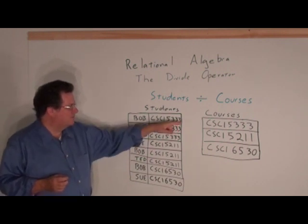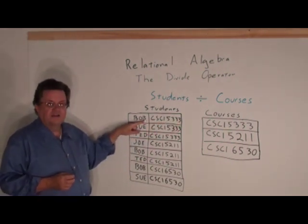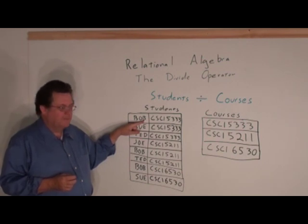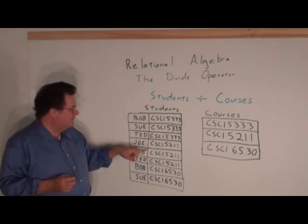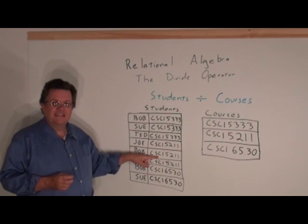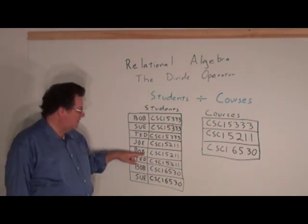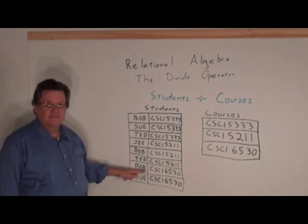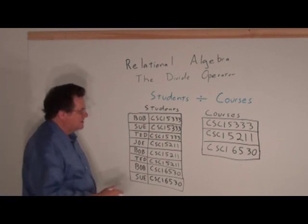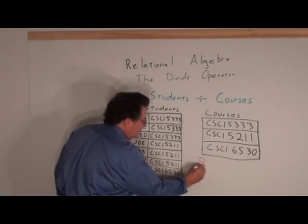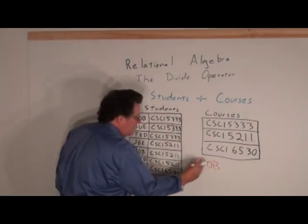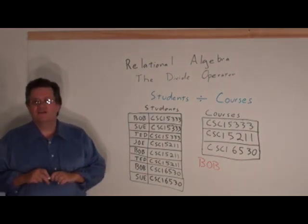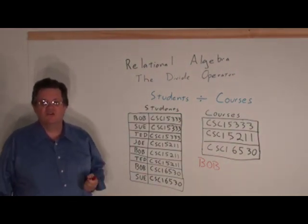Here we see for example CSCI 5333 maps to Bob. Okay, now let's jump down here. We see CSCI 5211 also maps to Bob and finally CSCI 6530 maps to Bob. So what we see is Bob will be in our solution set, that is Bob has taken all the classes.